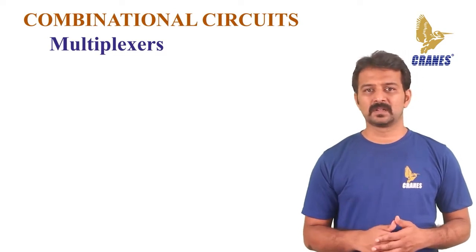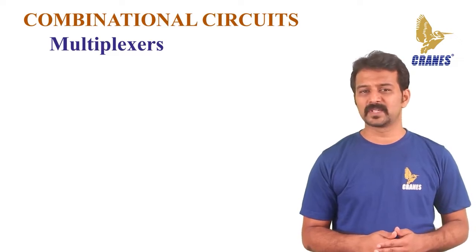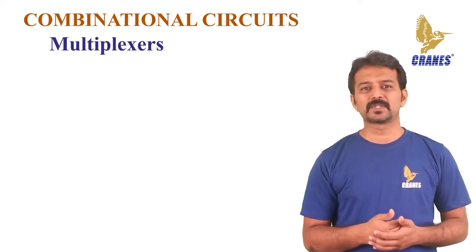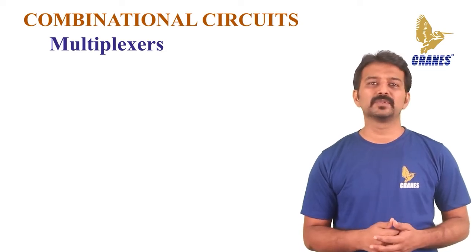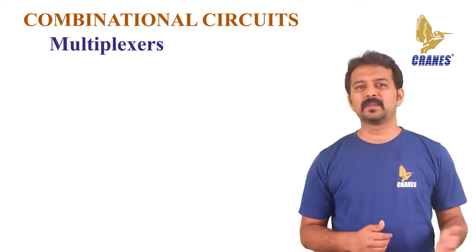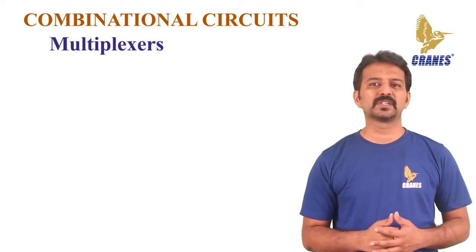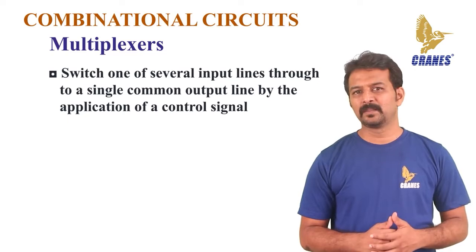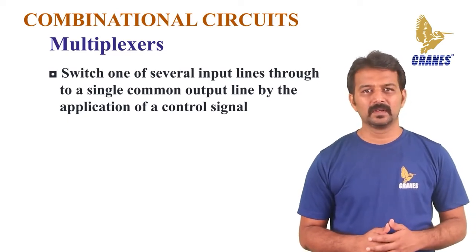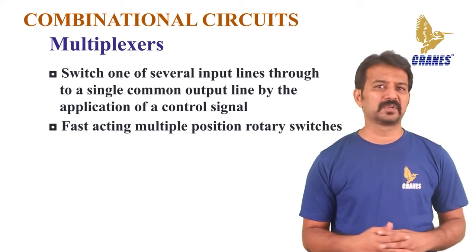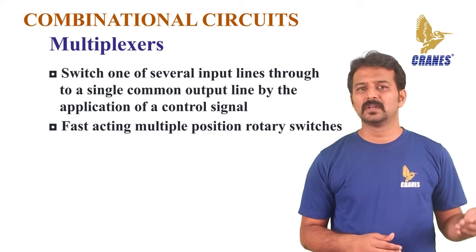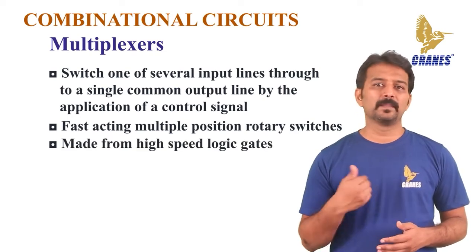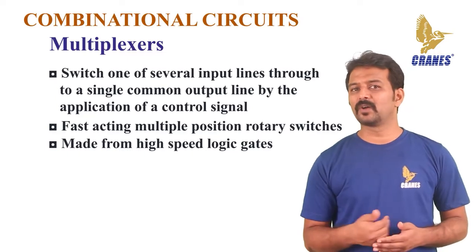Multiplexers. What is a multiplexer? Multiplexing is the generic term used to describe the operation of sending more than one analog or digital signal over a common transmission line, at different times or different speeds. The device we use to do just that is called a multiplexer. The multiplexer, shortened to MUX, is a combinational logic circuit designed to switch one of several input lines through to a single common output line by the application of a control signal. Multiplexers operate like very fast-acting multiple-position rotary switches, connecting multiple input lines — called channels — one at a time to the output. MUX are digital circuits made from high-speed logic gates used to switch digital or binary data.